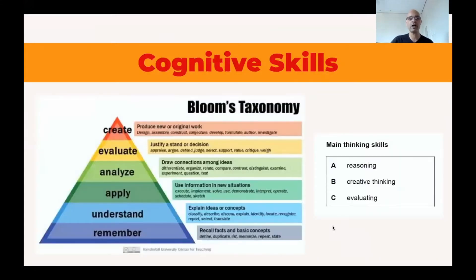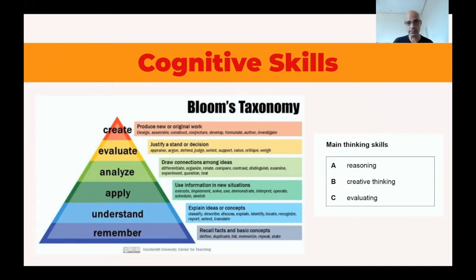What do we need to know about cognitive skills? One of the main tenets of CLIL is cognitive skills, and the main concept is based on what we know from Bloom's Taxonomy and other types of organization of thinking skills. From Bloom's Taxonomy, thinking skills go from lower level skills — remember, understand, and apply — to higher level thinking skills: analyze, evaluate, and create. The main thinking skills given in this task — reasoning, creative thinking, and evaluating — correspond to different thinking skills found in Bloom's Taxonomy.